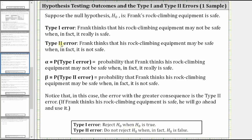For the type two error — which is the decision to not reject the null hypothesis when in fact the null hypothesis is false — the type two error would be: Frank thinks that his rock climbing equipment may be safe when in fact it is not safe. Alpha, the probability of the type one error, is the probability that Frank thinks his rock climbing equipment may not be safe when in fact it really is safe. And beta, the probability of the type two error, is the probability that Frank thinks his rock climbing equipment may be safe when in fact it is not.